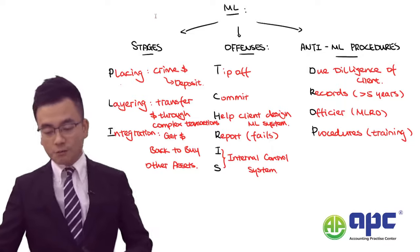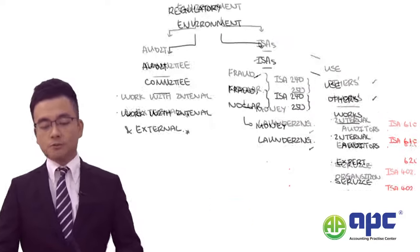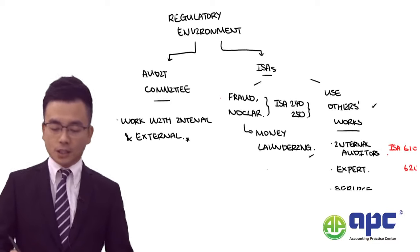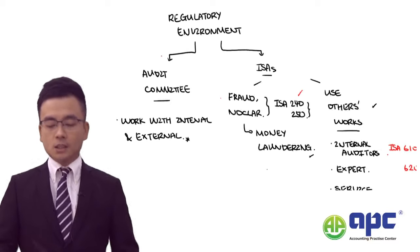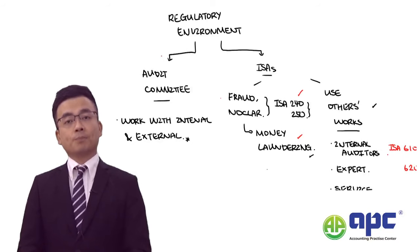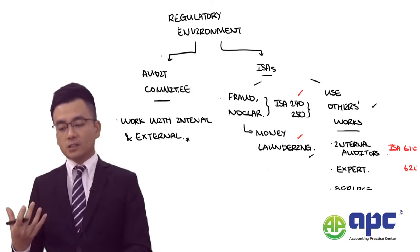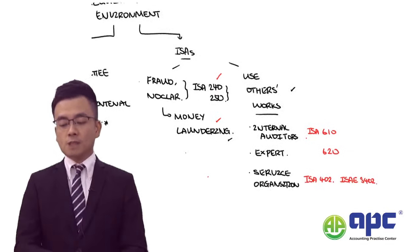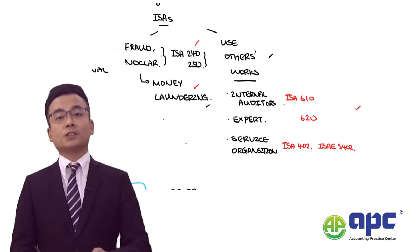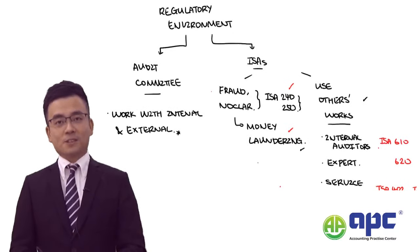So far we've finished a couple of major areas in the syllabus — ISA 240 and ISA 250, as well as money laundering. I'm going to stop this section here because in the next section we'll be recapping on using the works of others. I'll see you soon. Bye for now.